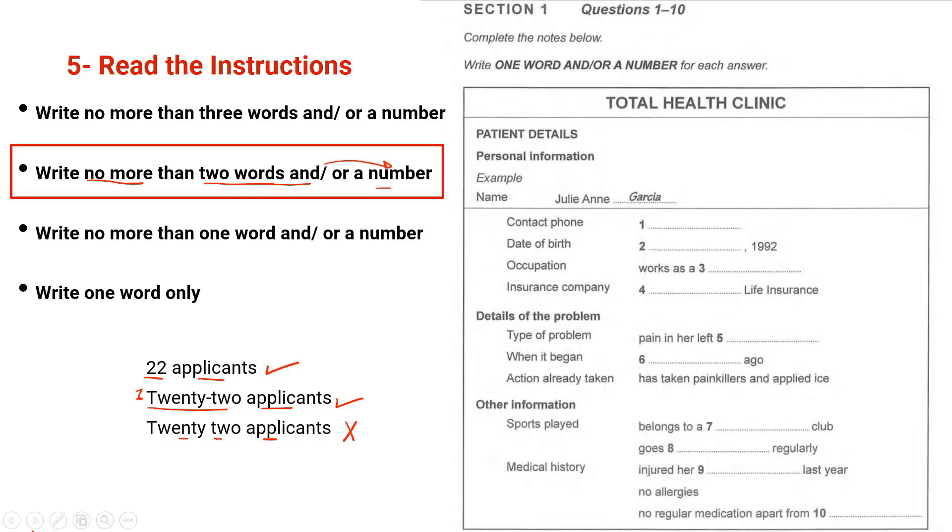So here, as you see, is a card and the instruction is write one word and/or a number. This means one word and a number, or only one word, or only a number. These are the three options we have. So the first question here, contact phone, you know that you are going to write only one number, it could be like 03372190, whatever. Date of birth 1992, so you expect the number and the month, so you can write something like second May. So this is a number and a word, which is correct.